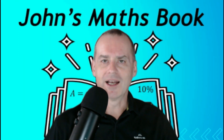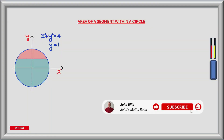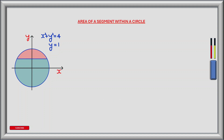Without further ado let's go over to the whiteboard. In this exercise we have a circle which is cut by a horizontal line creating a segment shown here in red. We are tasked with finding the area of the segment shown in red using double integrals and polar coordinates. We could use the equation to find the area of a circle's sector and subtract a portion of the blue region, but we'll use this to verify our solution.